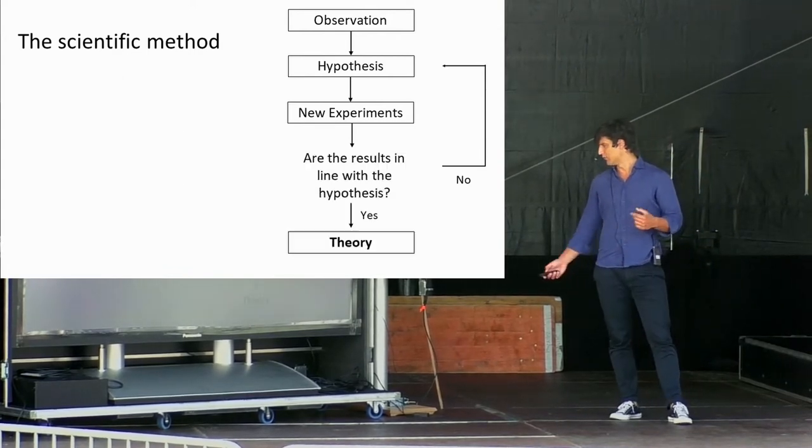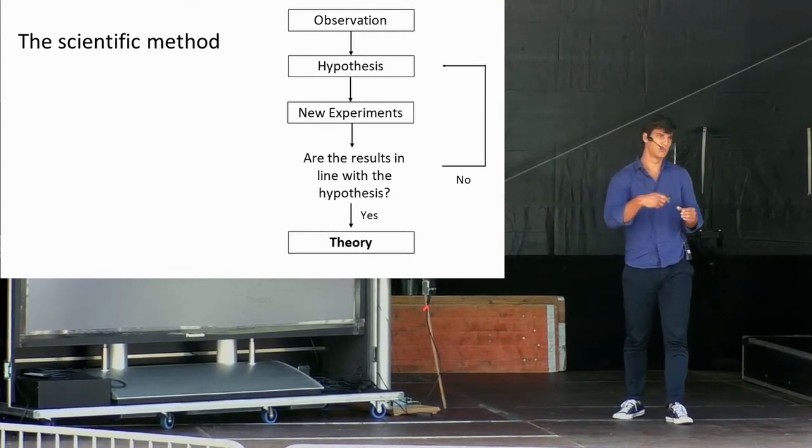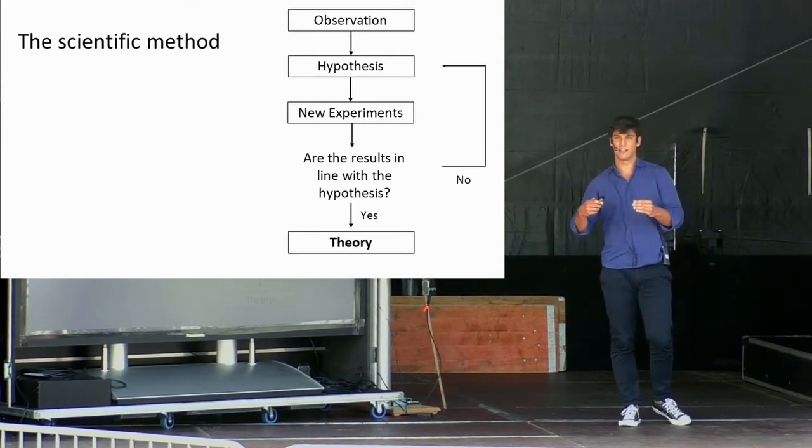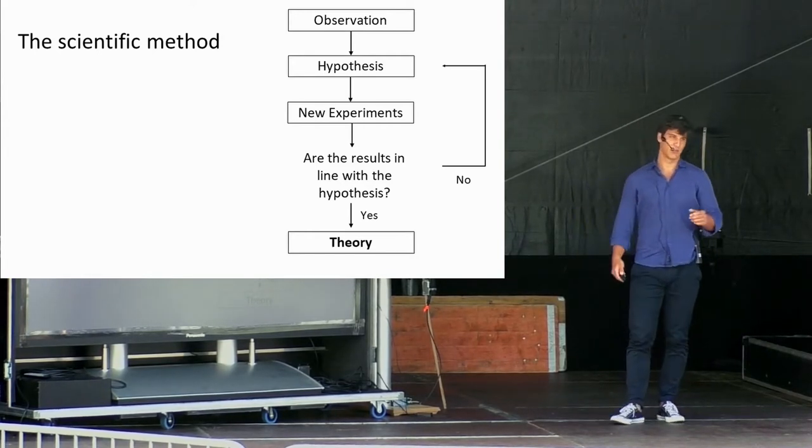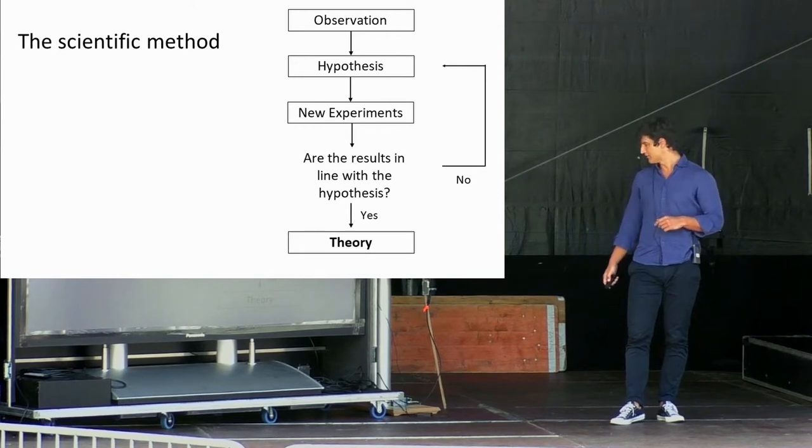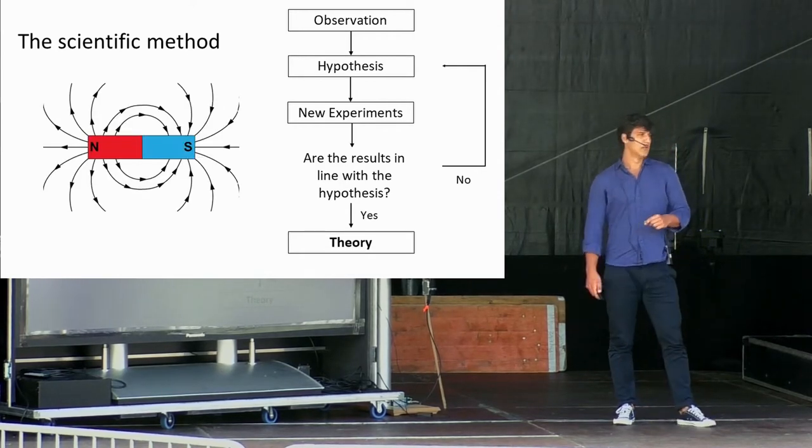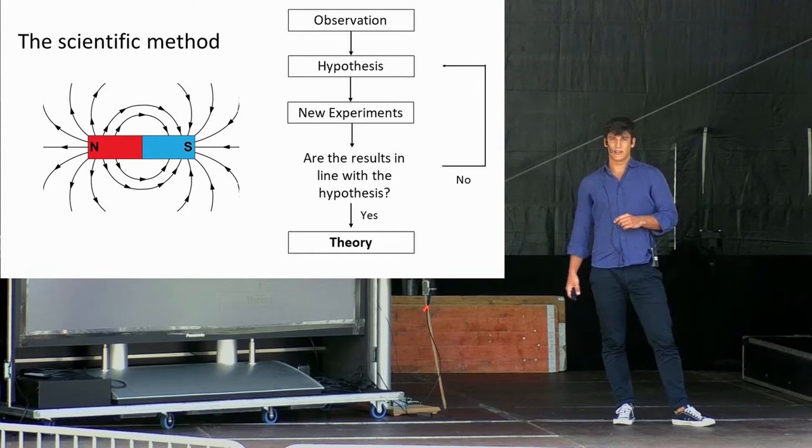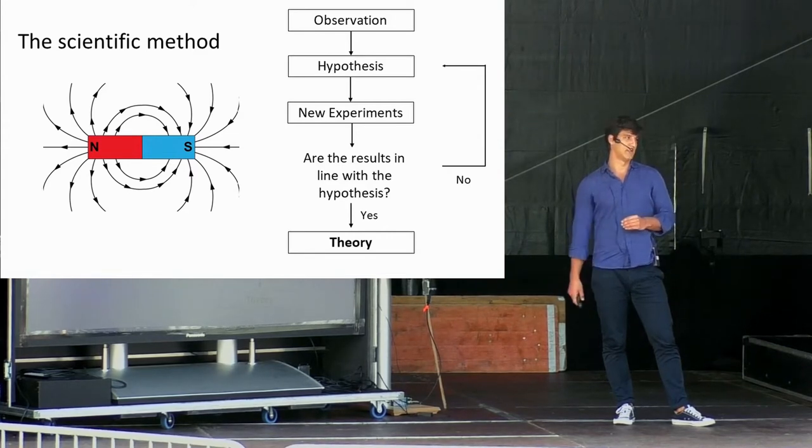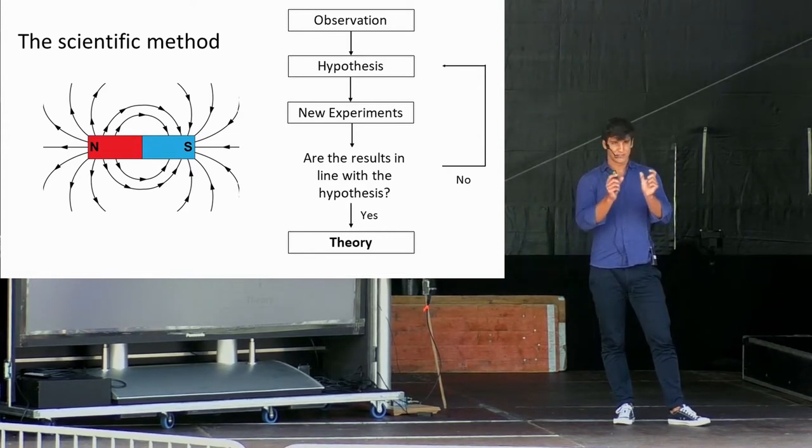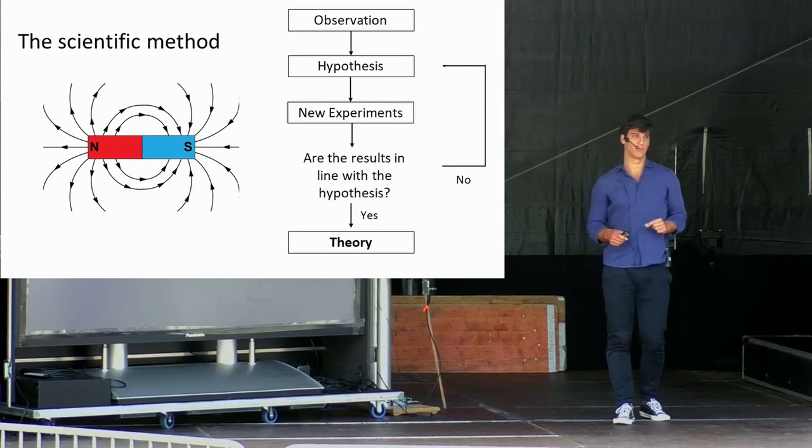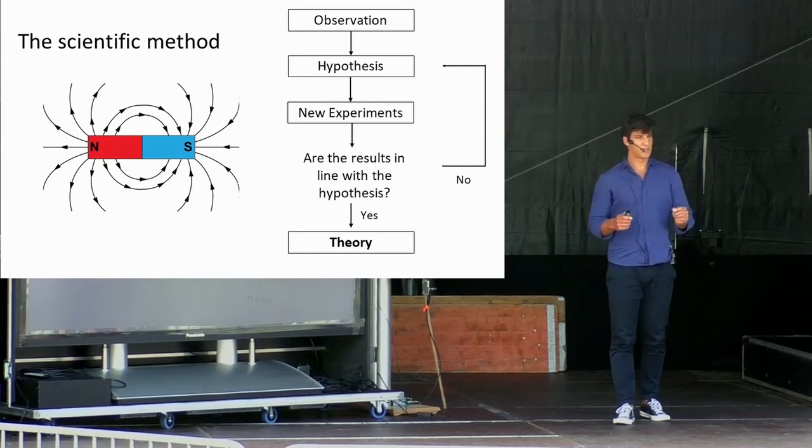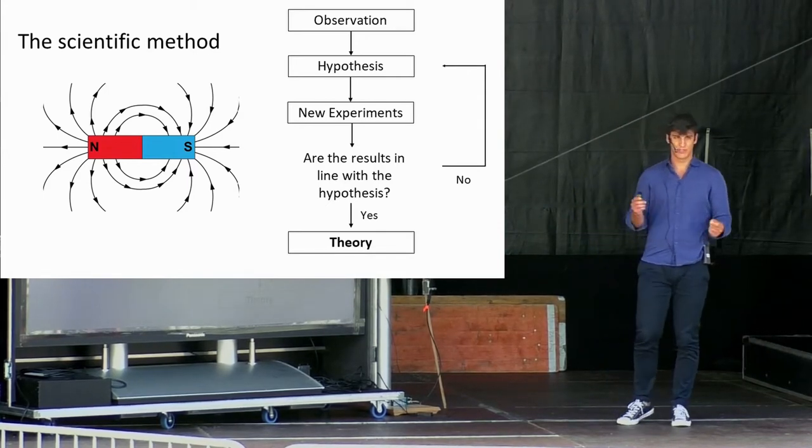Thus, we would be able to elevate our hypothesis to the role of a scientific theory and accept it as a valid description of the phenomenon we are studying. In our case, the effect we observe with magnets are due to magnetic fields, and now we know that each magnet has two different poles, a north and a south pole. The same poles repel each other, and opposite poles attract each other.